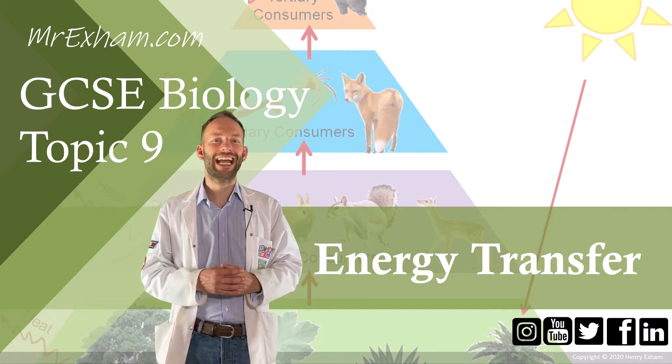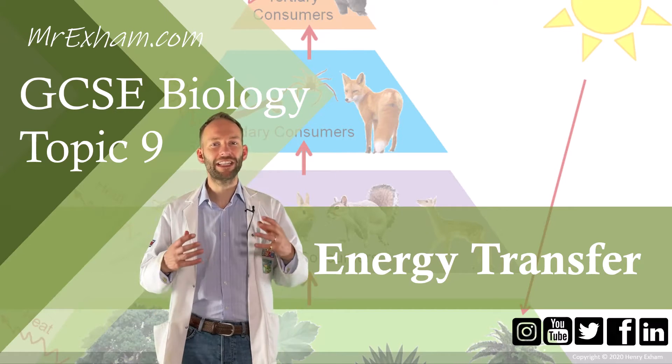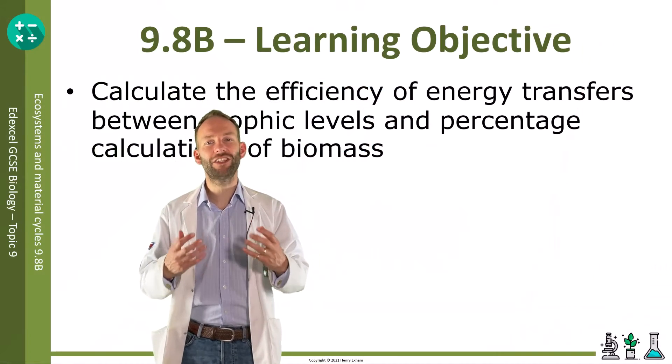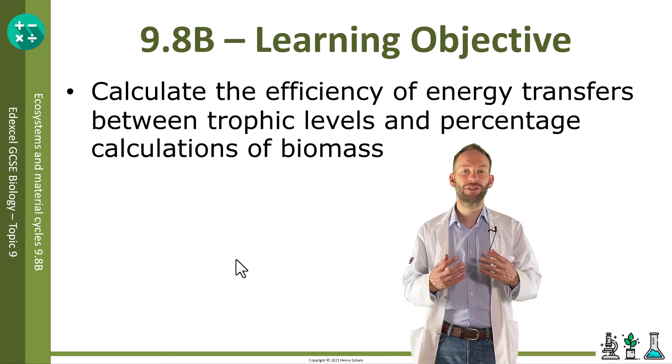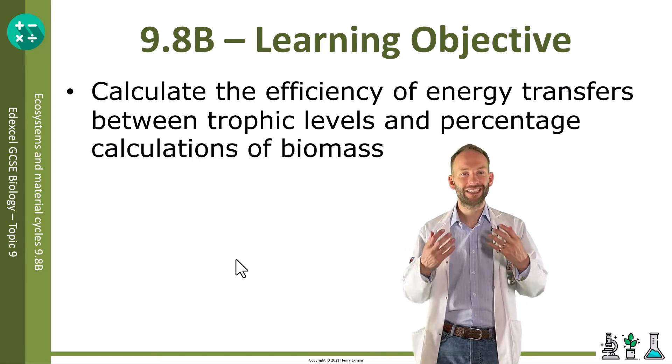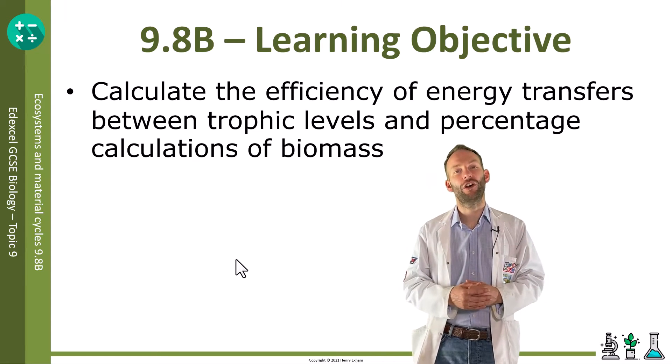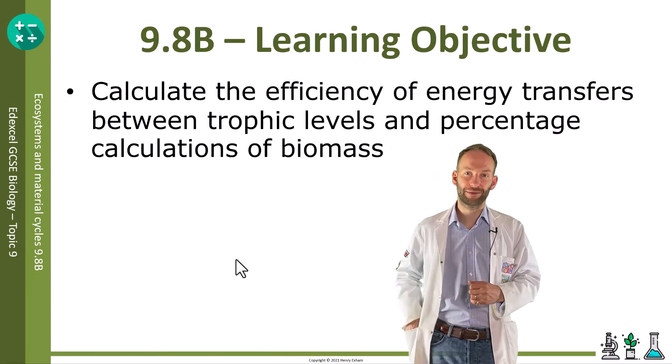Objective 9.8b: calculate the efficiency of energy transfers between trophic levels and percentage calculations of biomass.